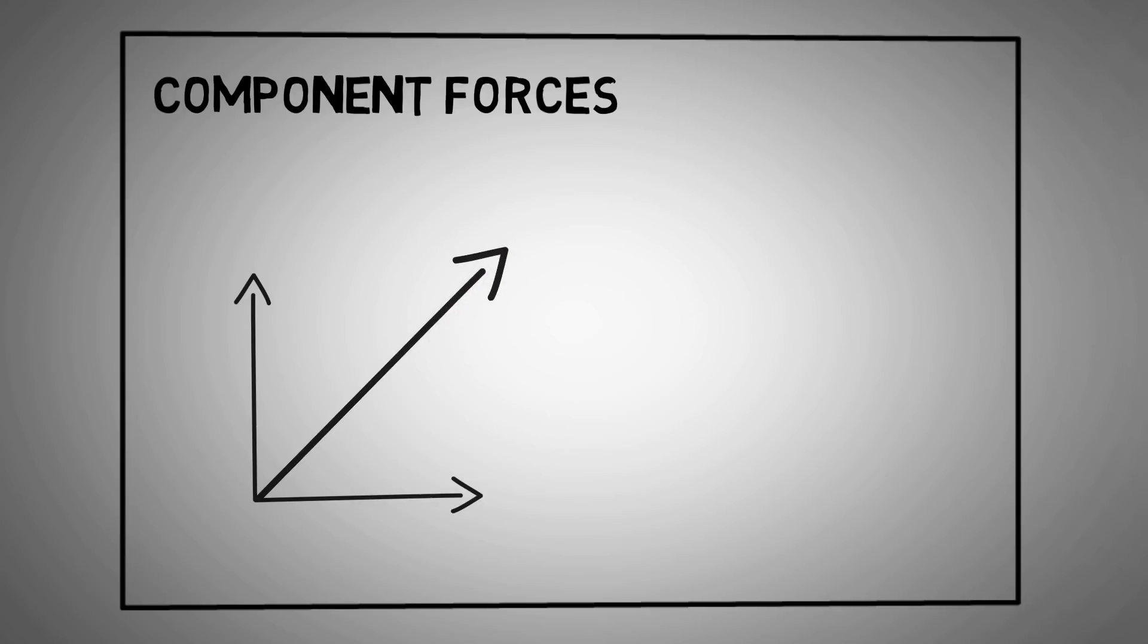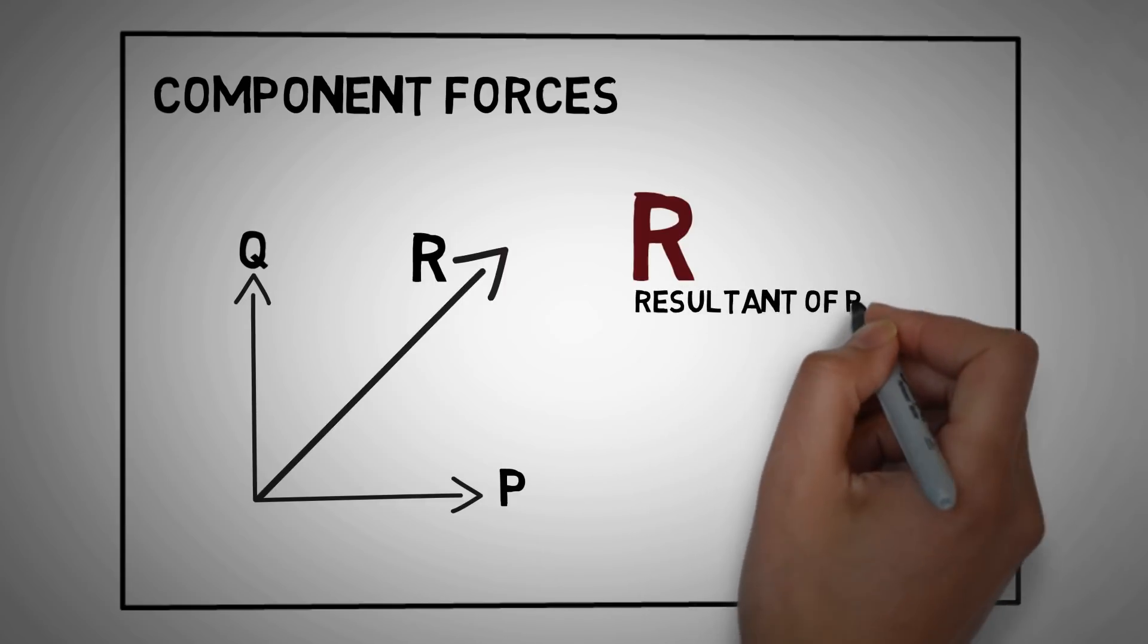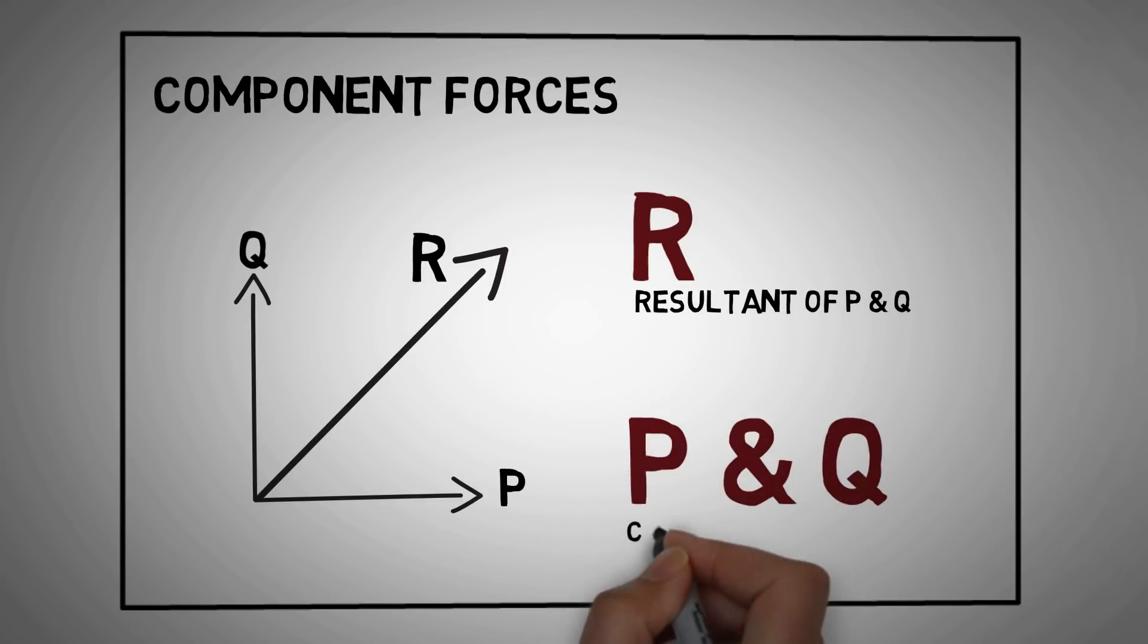Take for example, there are two forces P and Q. To make calculations easier, we resolve them into a single force R. Now, for all our calculations, we can consider R in place of P and Q. R is called the resultant of P and Q. P and Q are called the component forces of R.